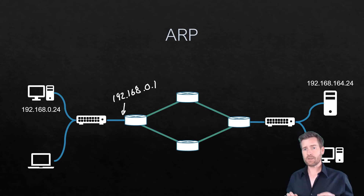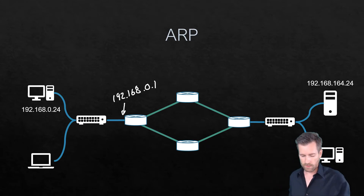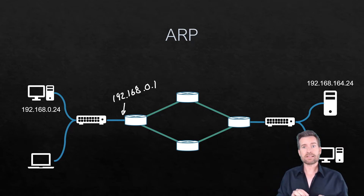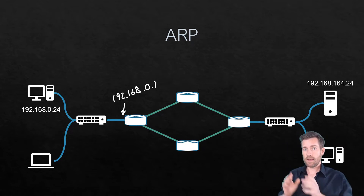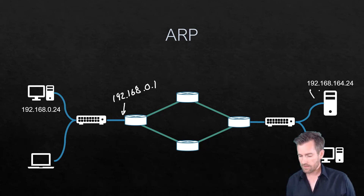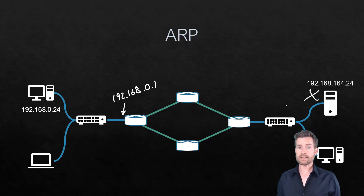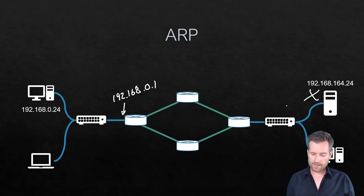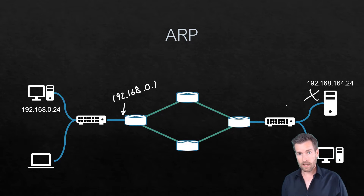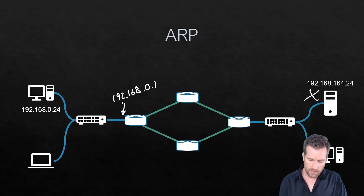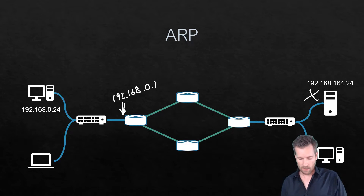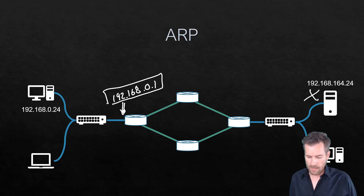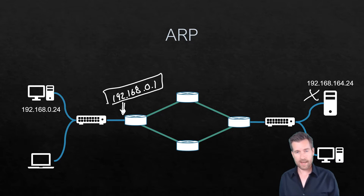Once it determines the destination is on a remote network and not within its local network, it doesn't need the MAC address of the end destination server. It needs the MAC address of its default gateway. The default gateway has an assigned IP address of 192.168.0.1, and it needs to find out the MAC address for that.